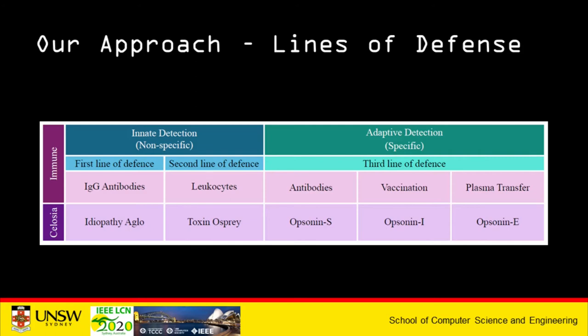The first line of defense is provided by idiopathy aglose agents, which you can relate to IgG antibodies in the human immune system. The second line of defense is provided by toxin ospre agents. These two lines of defense are not specific to a particular type of attack and they form innate detection. The third line of defense is provided by ospre agents of type S, I, and E. These different types may be related to antibodies, vaccination, and plasma transfer equivalents of the immune system. This line of defense is specific to a type of attack.